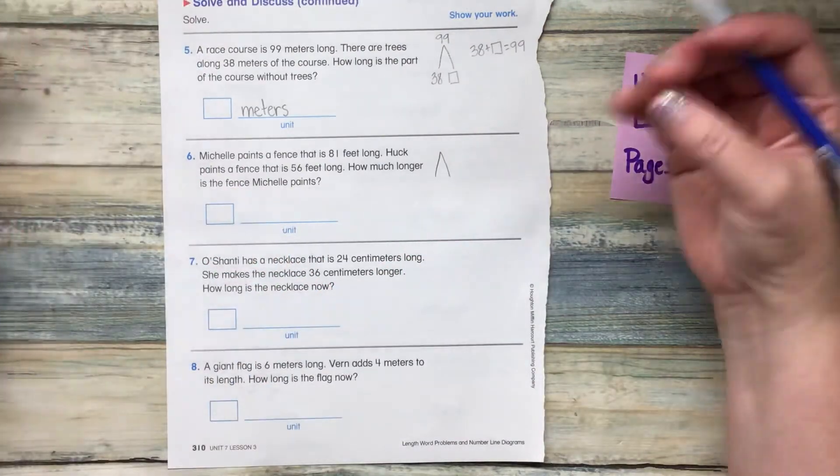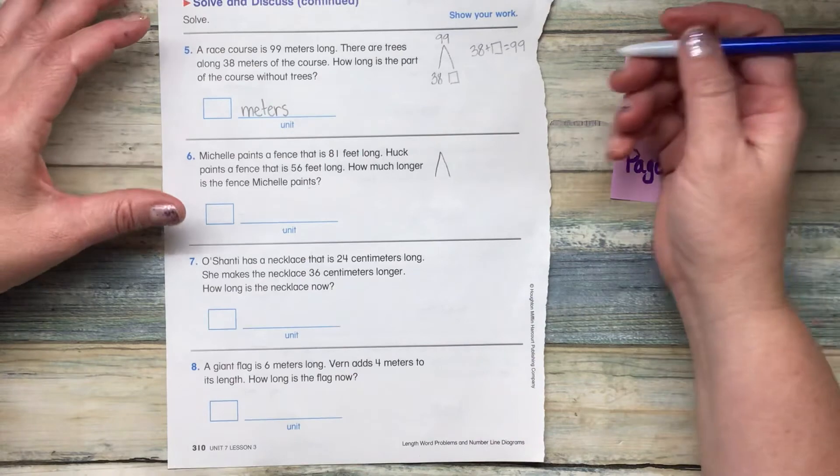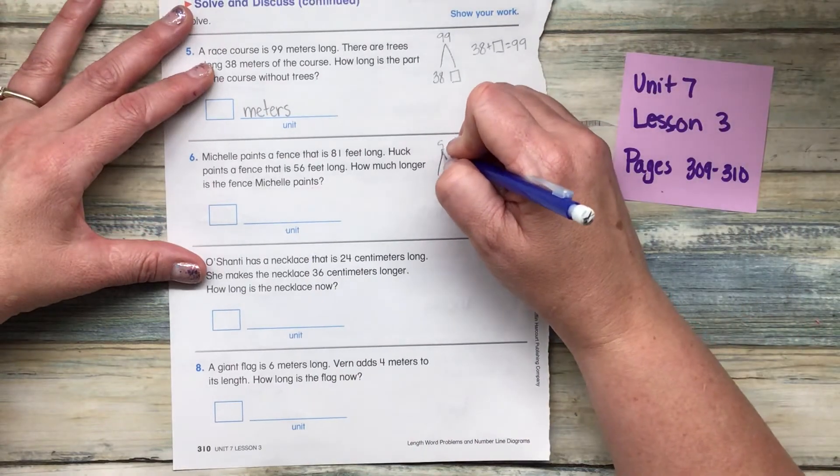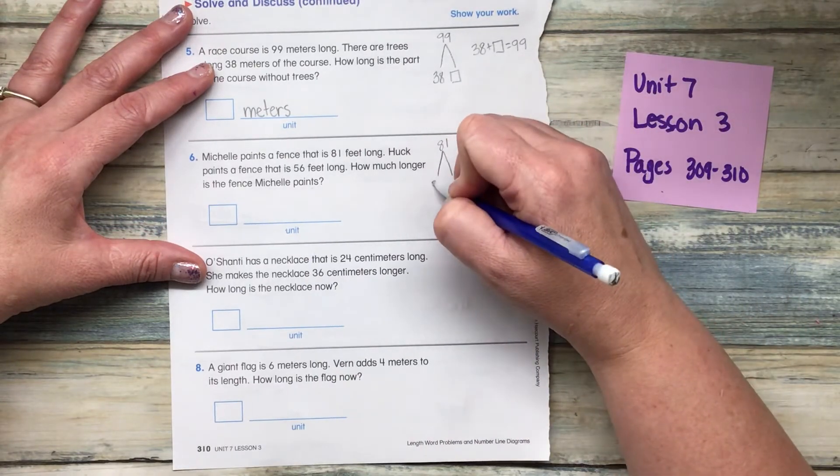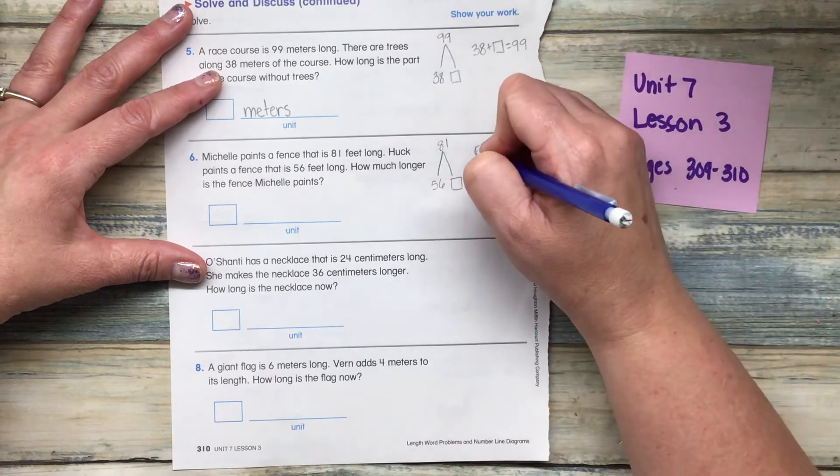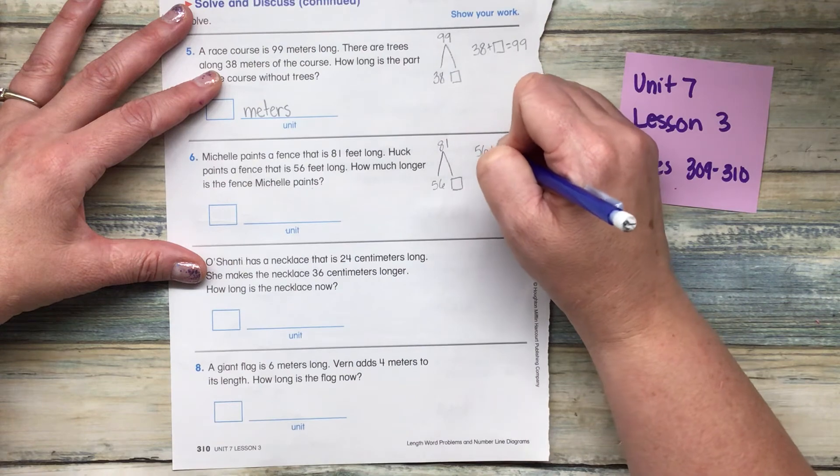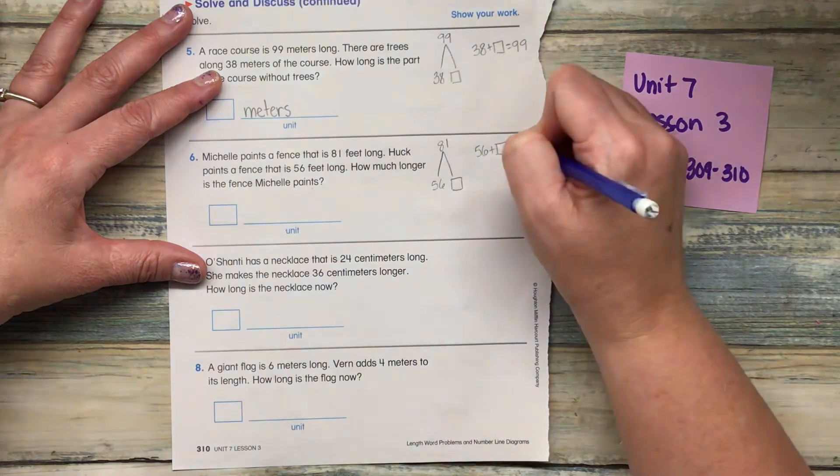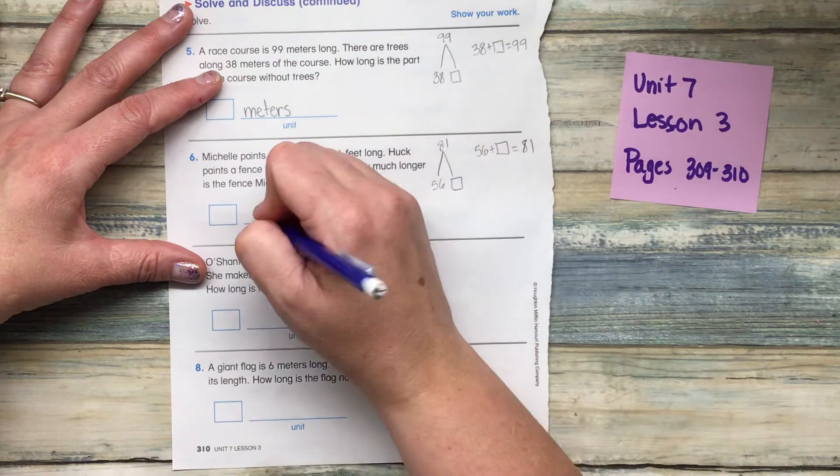So one is longer than the other. We're trying to find out the difference. So we want to put the longest one at the top and the other partner over here. So we can figure out 56 plus what equals 81 feet.